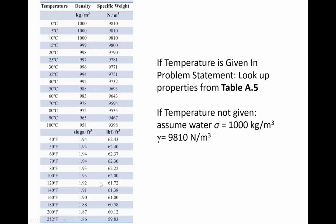Here's the table showing the relationship between temperature and both density and specific weight for water. In a homework problem or on an exam, if I tell you the temperature of the fluid, you should look up its temperature-specific properties. If I say water at 50°C, use the density or specific weight at that temperature. Fluids become less dense as they get warmer — the maximum density of water is at about 4°C, which is 1,000 kg/m³, and it becomes less dense as it warms. The same trend is true for air.